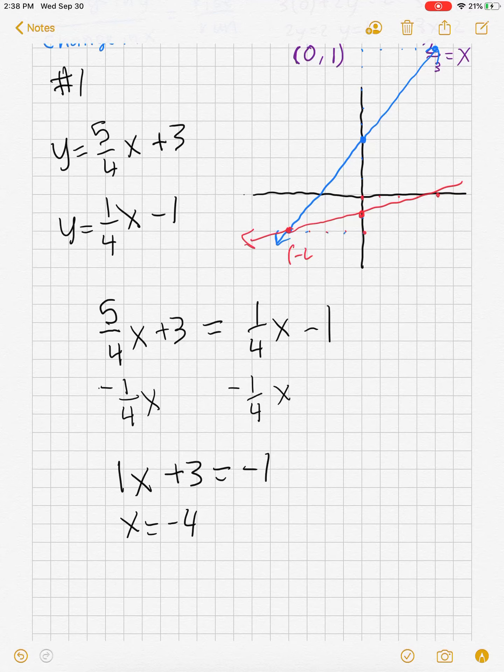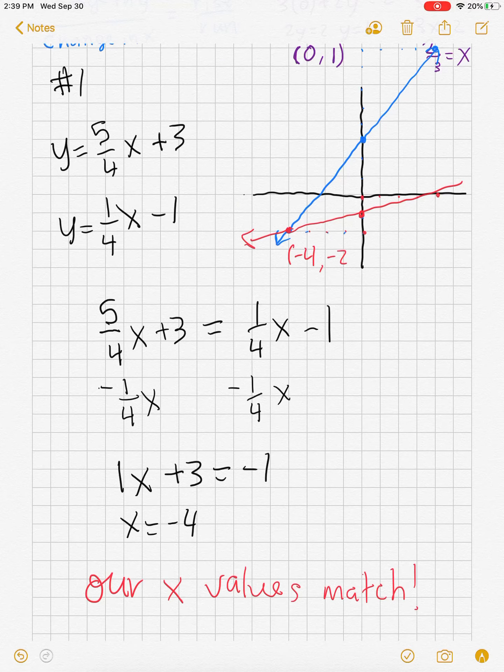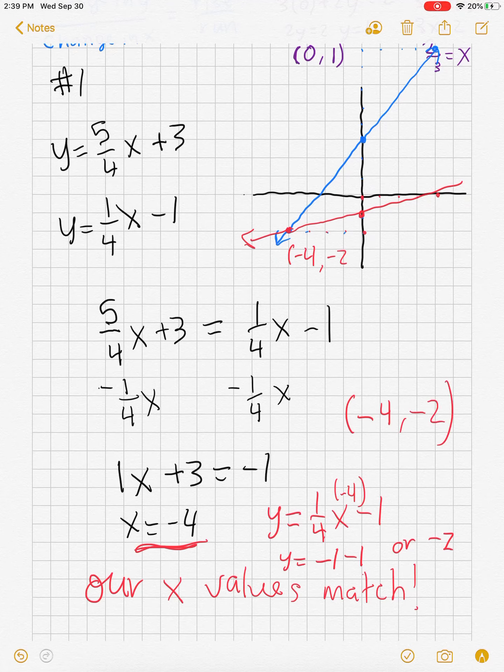They connect at that point right there. What is that point? It's negative four, negative two. Notice our x values match, meaning we're on the right track. Now we have one number here. How can we pair them? Well, let's go figure out what y equals. Y equals one fourth x minus one. We can plug in negative four for that, which gives us y equals negative one minus one, or negative two, which is the point that we got when we graphed. It all connects together. All right, as always, let me know if you have questions.